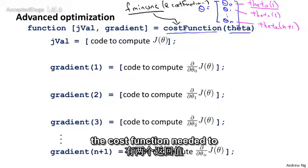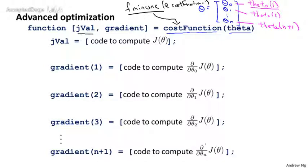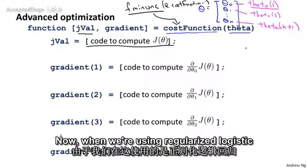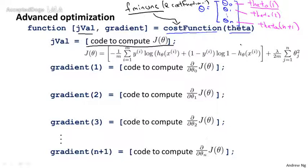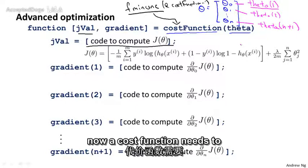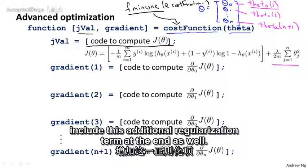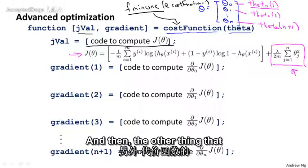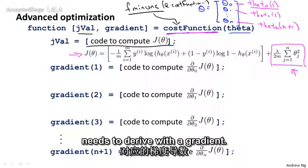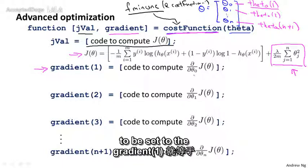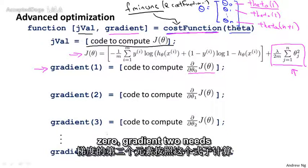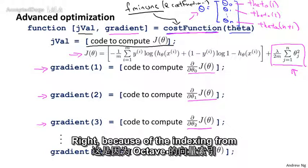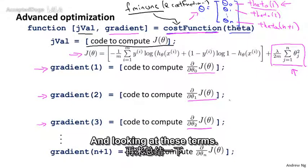So the two main things that the cost function needed to return were first jVal, and for that we need to write code to compute the cost function J(θ). Now when we're using regularized logistic regression, of course the cost function J(θ) changes, and in particular, now the cost function needs to include this additional regularization term at the end as well. So when you compute J(θ), be sure to include that term at the end. And then the other thing that this cost function needs to provide were the gradients. So gradient(1) needs to be set to the partial derivative of J(θ) with respect to θ₀, gradient(2) needs to be set to that, and so on. And once again, the index is off by one because of the indexing from one that Octave uses.